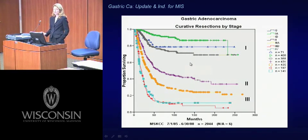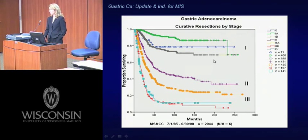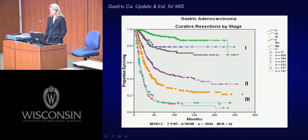Survival for stomach cancer is very stage-specific. Looking at data over a 15-year period with over 2,000 patients from our institution, even the difference between stage 1A and stage 1B patients shows dramatically different survival, largely due to the number of lymph nodes involved. Five-year survival is in the range of 85%–95% for early-stage stomach cancer. Even at stage 2, survival drops markedly to roughly 55%–65% five-year survival. Stage 3 and stage 4 survival is very different and more consistent with overall national statistics.